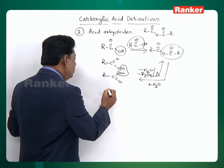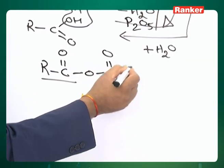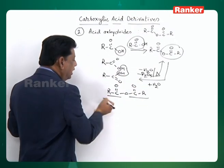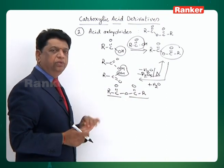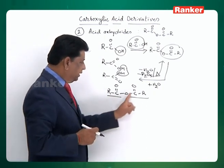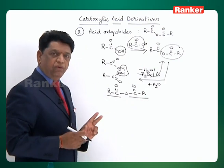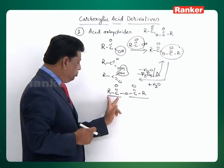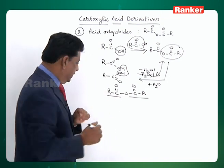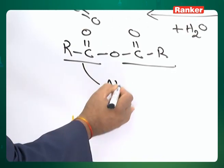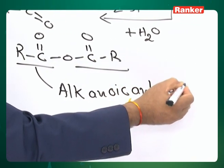Now, how do you name anhydrides? The two sides are treated as identical because both come from the same compound, so if you say one side it is understood the other side is the same. Let us say two carbons on each side — the root word is not four because oxygen is in the center. So two carbons will be the longest chain or the root word. This is called ethanoic anhydride, written as alkanoic anhydride.